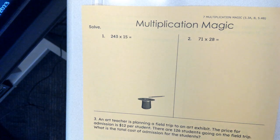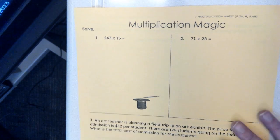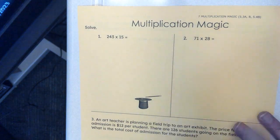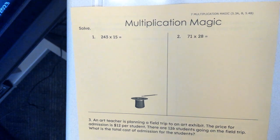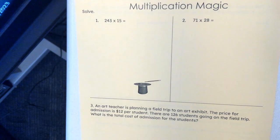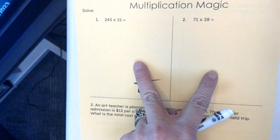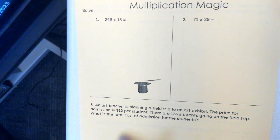Okay, so today's directions are that you are going to complete Multiplication Magic on your own. As you preview this assignment, you can see that there are two problems on the front, there's a word problem on the front.